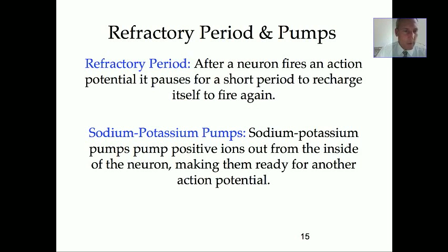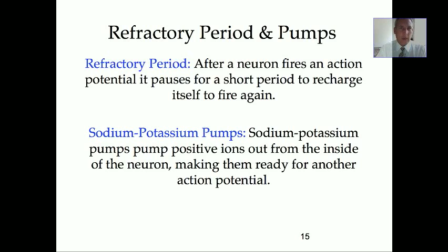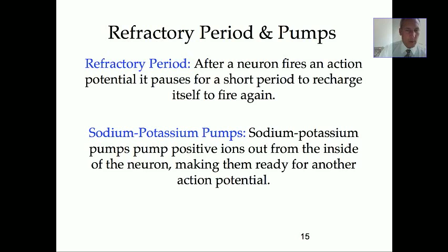A couple of terms: one I mentioned before, and a new one — refractory period. After a neuron fires an action potential, it pauses for a short period to recharge itself to fire again. A neuron can fire pretty rapidly, but there is a period where it won't. Those positive ions that moved in are pumped back out by what is called the sodium-potassium pump, which sets the neuron up for another action potential.